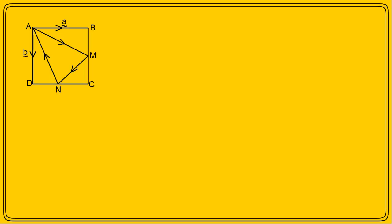So let's begin with a relatively simple geometrical problem. Here is a square ABCD, and the midpoints of BC and CD are M and N respectively. We are given that the vector AD is vector b and the vector AB is vector a. The question is in four parts. Firstly, what are the vectors MC and CN in terms of a and b?